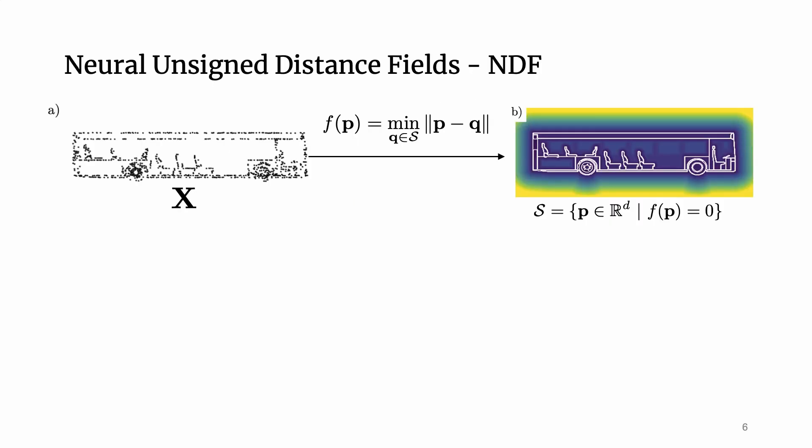Given an incomplete input X and a point in space, a neural network predicts the unsigned distance of the complete object. We call this a neural unsigned distance field or NDF for short. The surface of the object is given by all points which have a distance of zero.